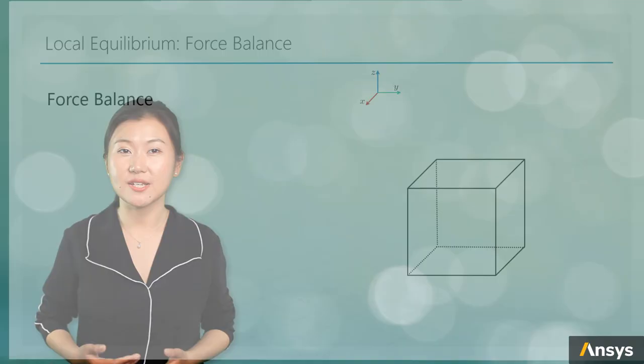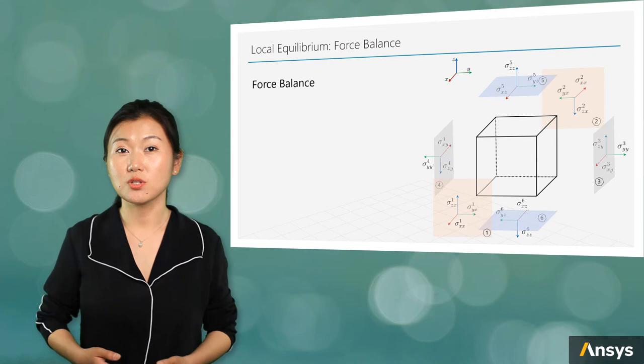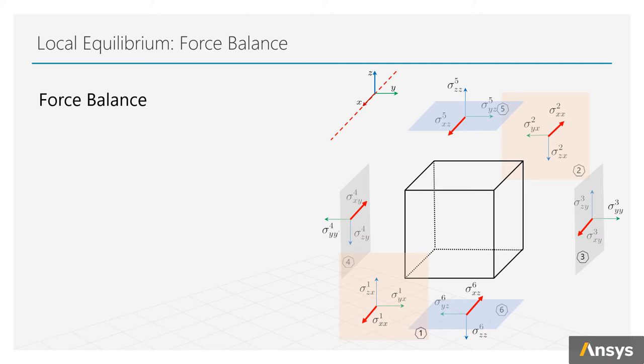With the relationship between surface forces clarified, let's sum up forces in x, y, and z direction. So, what are the forces in x direction on this cube? On surface 1 and 2, there are forces on x direction from sigma xx. Let's sum them up and times the area. Surface 1 and 2 share the same area value.